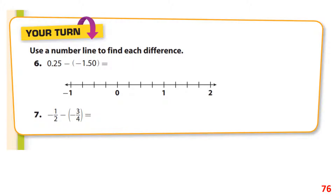Use the number line to find the difference. We start at 0.25, shown on the number line, and we're subtracting a negative — which means we go to the right — one and a half spaces.